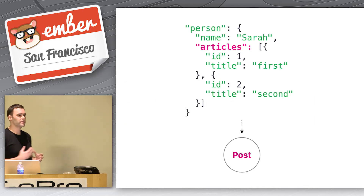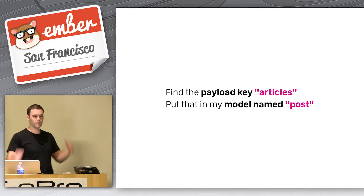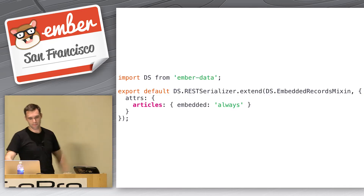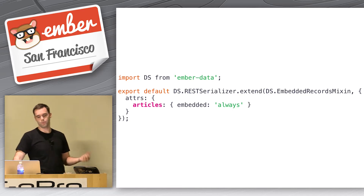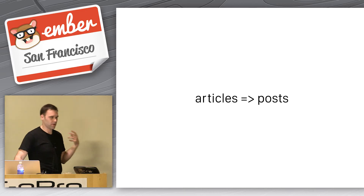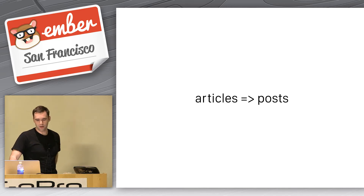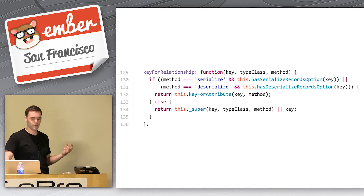The problem is, let's say I've got a little bit of a mismatch — my model is post, but my information is articles. Using my mental model, I'm thinking: find the payload key articles and then put that in my model named post. I look at this and think the serializer goes through it, sees articles, and should put them into post — but how do I tell it to do that? So if you start doing what every good Ember Data developer does and read the source code, you eventually come upon a hook called key for relationship. Now I'm a little confused — what key am I looking for? My relationship, I suppose, is posts, and this takes a key and returns a key.